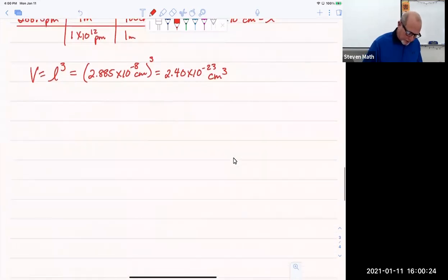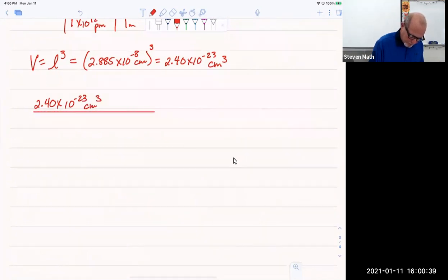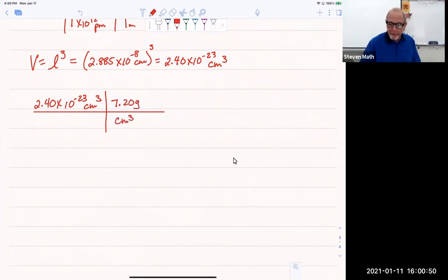Now, what we can do is use that volume 2.4 times 10 to the negative 23rd. It's not very large, but doesn't need to be. It's not going to weigh very much for us now. Take that and know that it's 7.20 grams per centimeter cubed. That's the density of chromium that was given in the problem. So this is going to get us from volume to mass 1.73 times 10 to the negative 22nd.